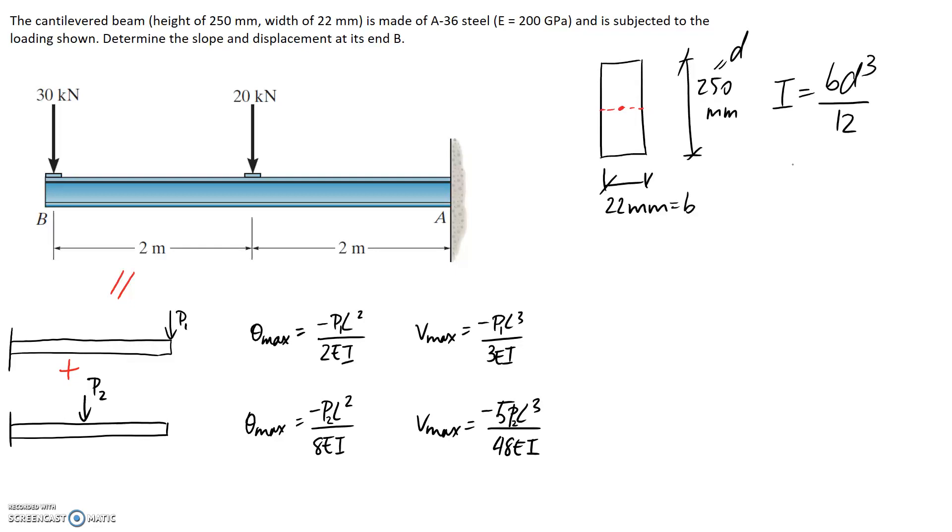We can go through and calculate it, so b is 22, d is 250. That's about 2.86 by 10 to the 7, and the units are millimeters to the fourth. So this is what's going to go in for I in each of these different equations.